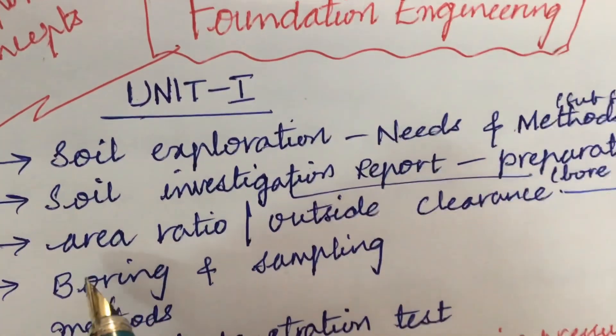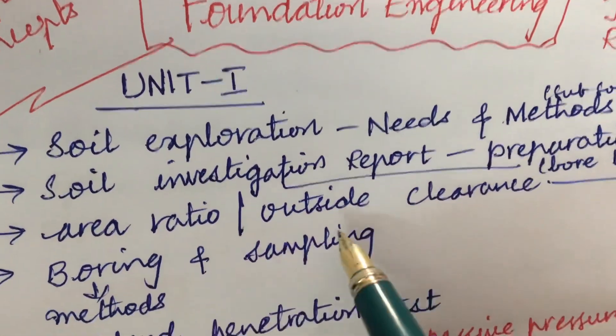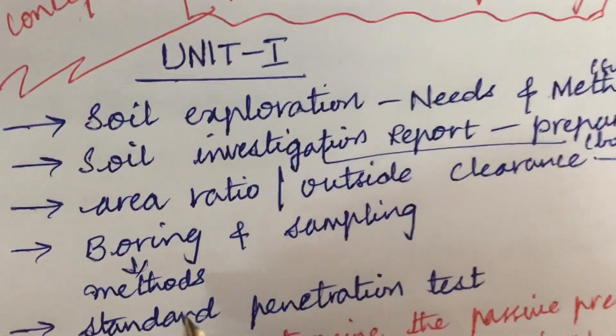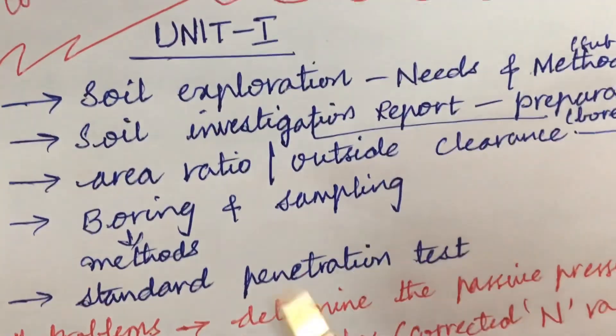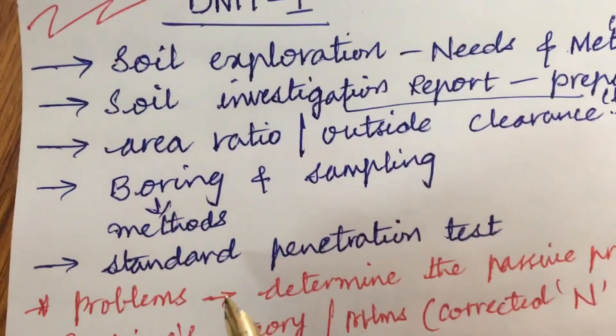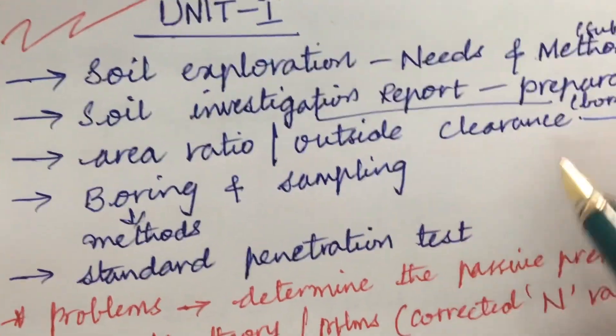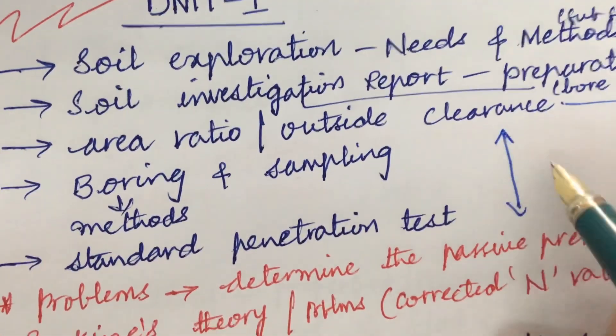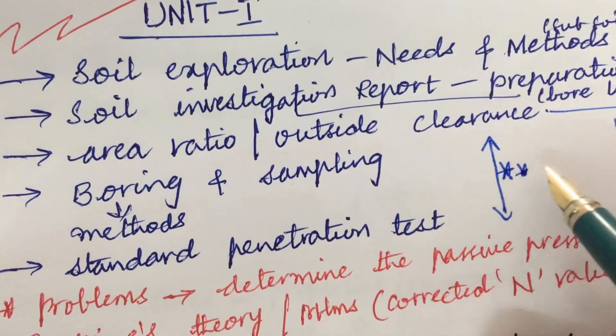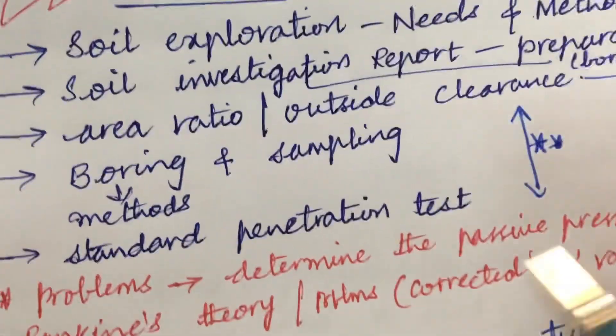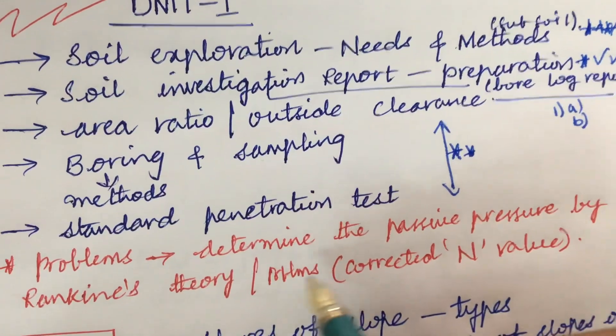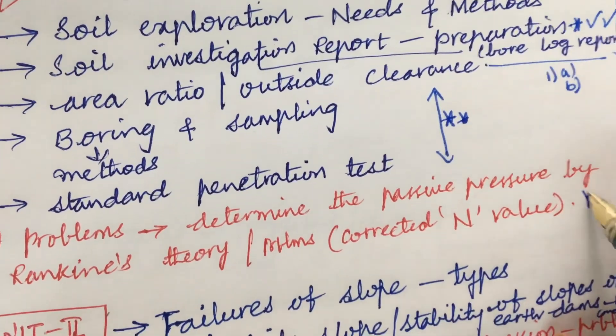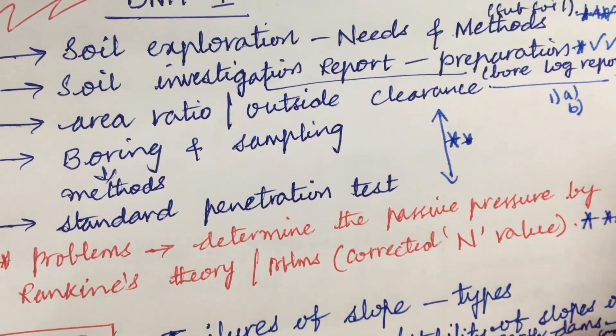Later certain definitions like define the area ratio as well as the outside clearance, explain the different types of boring methods and sampling, as well as how you are going to prepare the standard penetration test is also one of the much awaited questions. From these concepts, problems to determine the passive pressure by Rankine's theory as well as the problems related to corrected N value is also one of the gunshot questions.